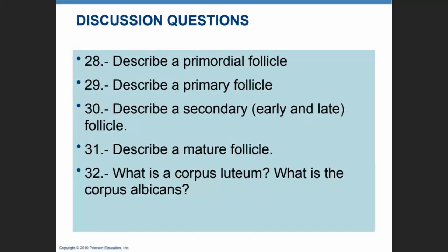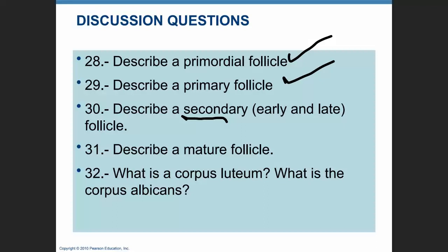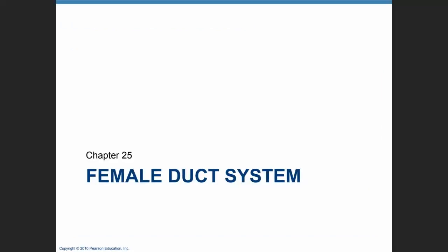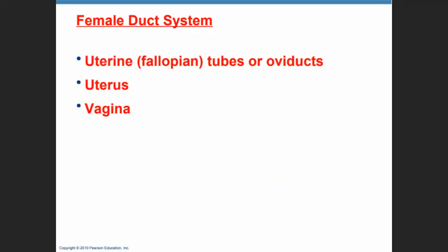You should be able to describe follicles and distinguish primary from primordial follicles, early and late secondary follicles, the mature follicle, and distinguish between corpus luteum and corpus albicans. Moving on with the female reproductive system, we're going to now look at the female duct system, which consists of the uterine or fallopian tubes, which pick up the oocyte ovulated from the ovaries and move it into the uterus. If it's not fertilized and implanted, it will disintegrate and menstruation will occur. The vagina is the conduit that takes the spermatozoa into the uterus and eventually the uterine tubes.